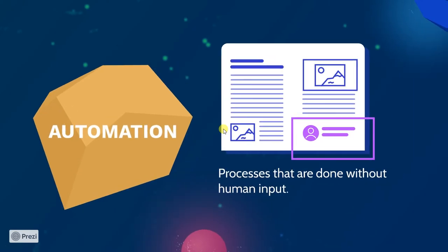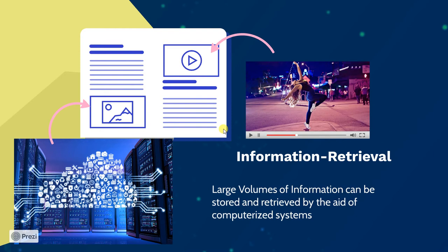Automation — it sounds fancy, but what it really works out to be is processes that are done without the need for human input. It's any task you give the computer or machine to do without having to physically monitor it or do the task yourself. It just runs in the background, just like when you start your computer up and it runs without you having to tell it which processes to run to bring up Windows or whatever operating system you're using.